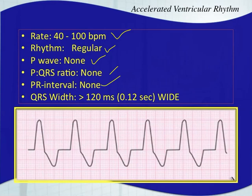I will caution you that a ventricular rhythm is not the only thing that causes the QRS complex to be wide. We're talking about time here, so there are other things that can cause time to slow down as far as taking longer to cause ventricular depolarization — we'll talk about that later. But this is the first cause. You need to think ventricular first when you see a wide complex, until you can prove otherwise.